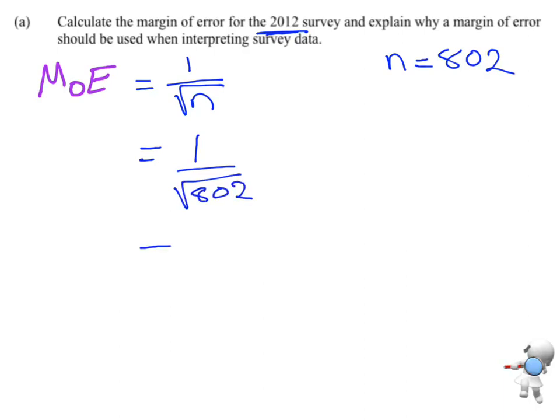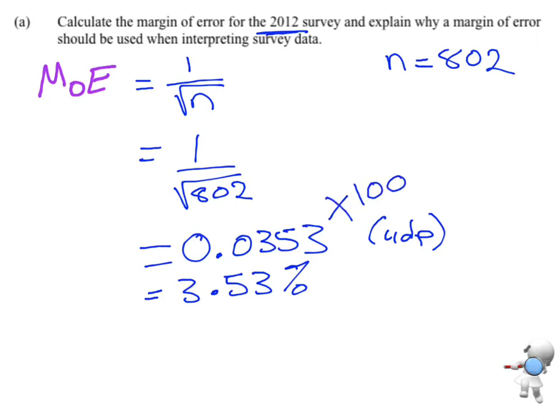In this case my sample size n is 802. So I'm going to put 1 over the square root of 802 into the calculator and that will give me a value of 0.0353, that's to four decimal places. Now margin of error I need to turn into a percentage, so that's going to be 3.53%. I just took that decimal and multiplied by 100. That's the first part, calculate your margin of error.